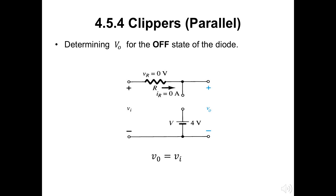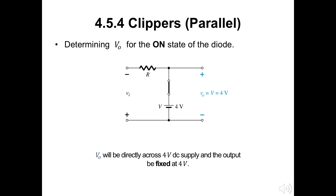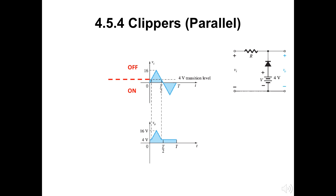On the OFF state, as the circuit at the diode will be open circuit, the VO will be equal to VI. As we gain VO is 4 volts, we can say VO will be directly across the 4 volt DC supply and the output is fixed at 4 volts. Now, to portray or illustrate VO from VI, we need to be careful with the transition level and the ON or OFF state of the diode as gained in the previous slides.